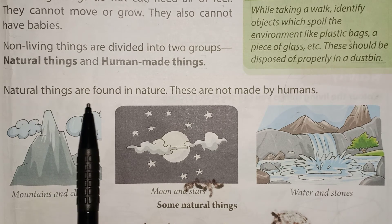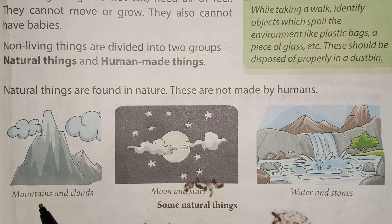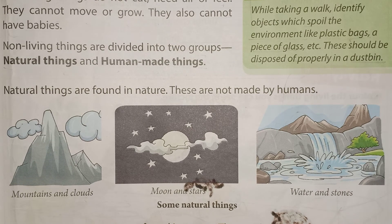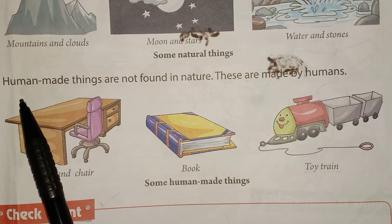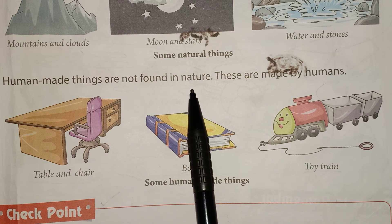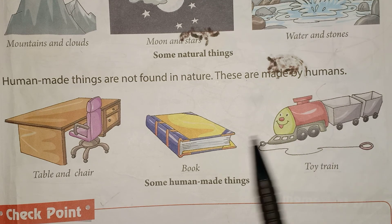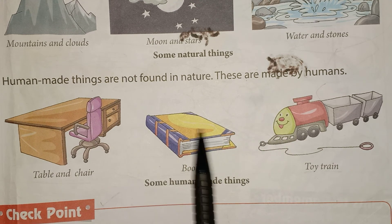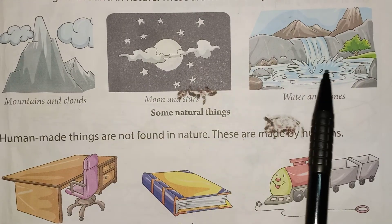Natural things are found in nature and are not made by humans — for example, mountains, clouds, moon, stars, water, and stone. These are all natural non-living things. Now, something that humans have created — human-made things — are not found in nature. See: table, chair, book, toy train. We don't find them in nature; we have to make them. So these are human-made non-living things.